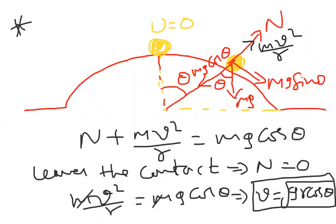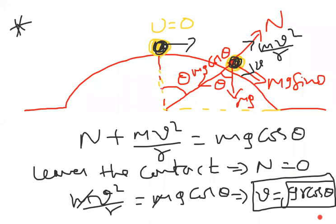To summarize: the object starts at the top with u = 0 and slides down. At the point where contact is lost, centrifugal force mv²/r acts outward, weight mg acts downward with components mg cos θ and mg sin θ. Setting N = 0 in the normal direction equation N + mv²/r = mg cos θ gives these velocity expressions. Normal reaction equals zero is the key condition for losing contact.